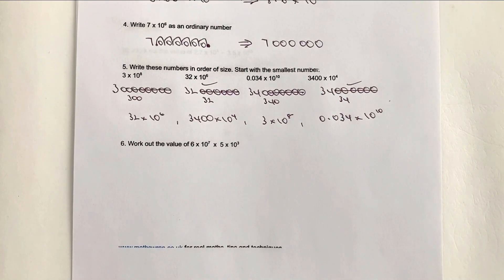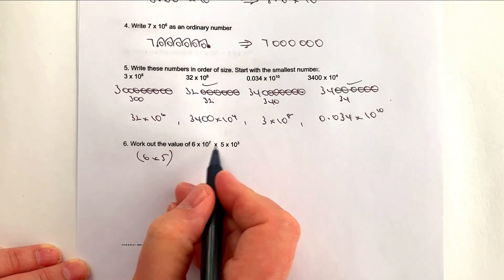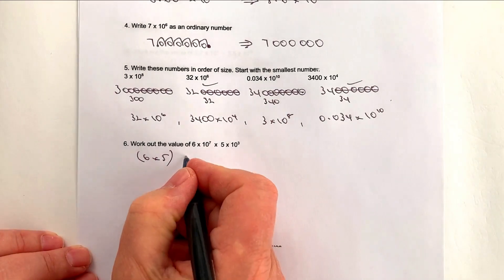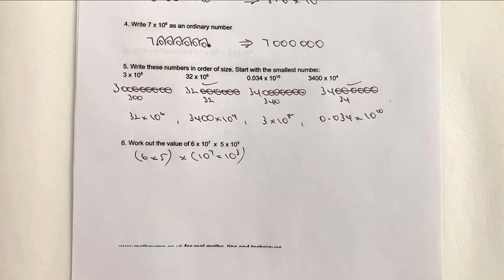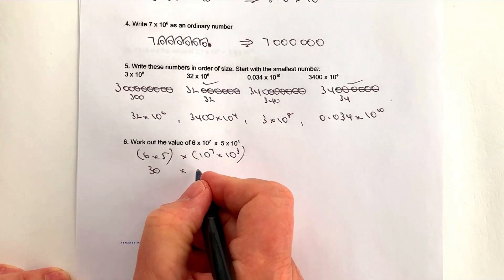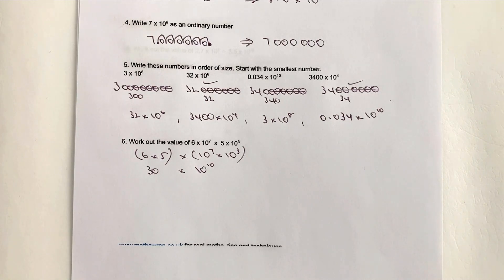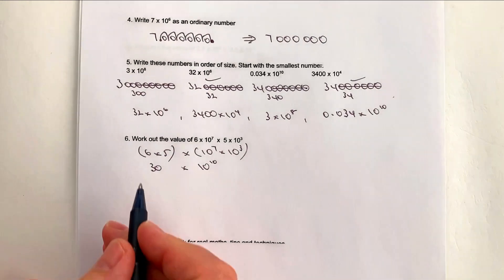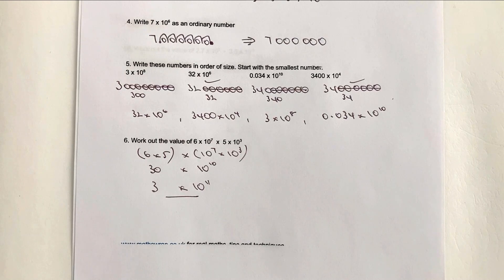Work out the value of 6 times 10 to the 7 times 5 times 10 to the 3. This is a non-calculator question. What you do is work out the integers separately from the standard form part: 6 times 5 is 30, and 10 to the 7 times 10 to the 3 gives 10 to the 10 by adding the indices. But 30 times 10 to the 10 isn't standard form, so change it to 3 and move the decimal point one place — giving 3 times 10 to the power of 11.